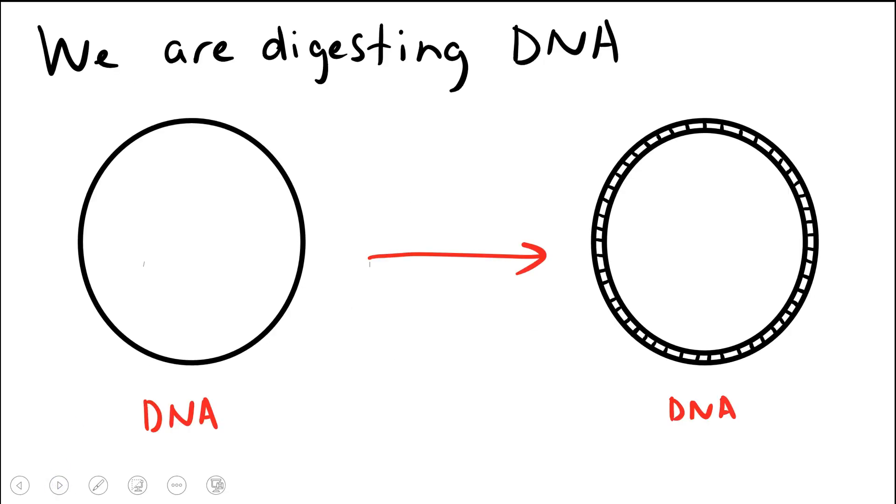Just a quick reminder of what we're talking about here. I use a simple representation of double-stranded DNA, this sort of single-line loop. However, I want you to remember that what we're actually digesting with our restriction enzymes is in fact double-stranded DNA. So let's get started.